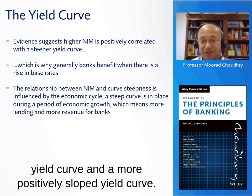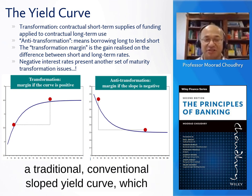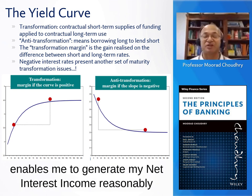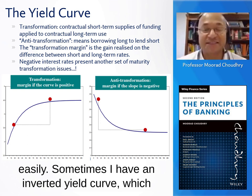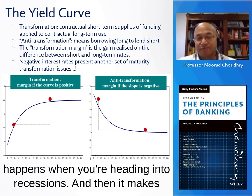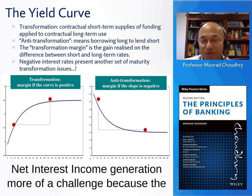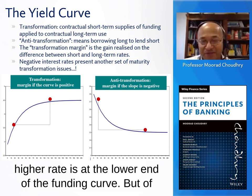There is a close connection between a higher net interest margin and a higher, more positively sloped yield curve. That's what I'm showing on slide 18. The left-hand side is the traditional conventional sloped yield curve, which enables me to generate net interest income reasonably easily. Sometimes I have an inverted yield curve, which happens when heading into recessions, and then it makes net interest income generation more of a challenge because the higher rate is at the lower end of the maturity curve.